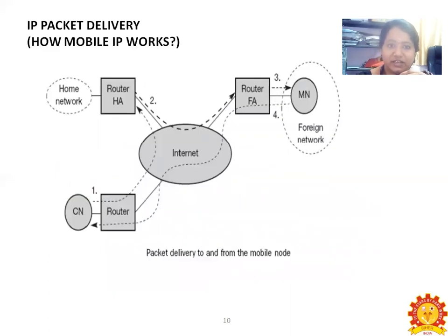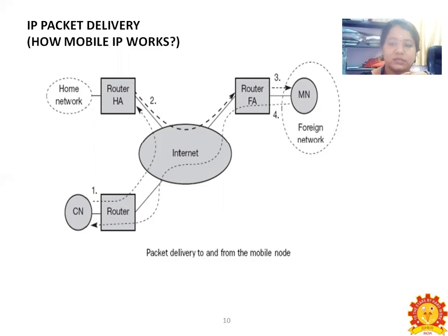IP packet delivery — how Mobile IP works: the correspondent node sends data to the router, while the home network sends data to the Home Agent router. From router HA, data travels through the COA (Care-of Address) to router FA — the second step. From router FA, data reaches the mobile node on the foreign network — the third step. From the mobile node, data goes back to the correspondent node. This is how packet delivery to and from mobile nodes works.